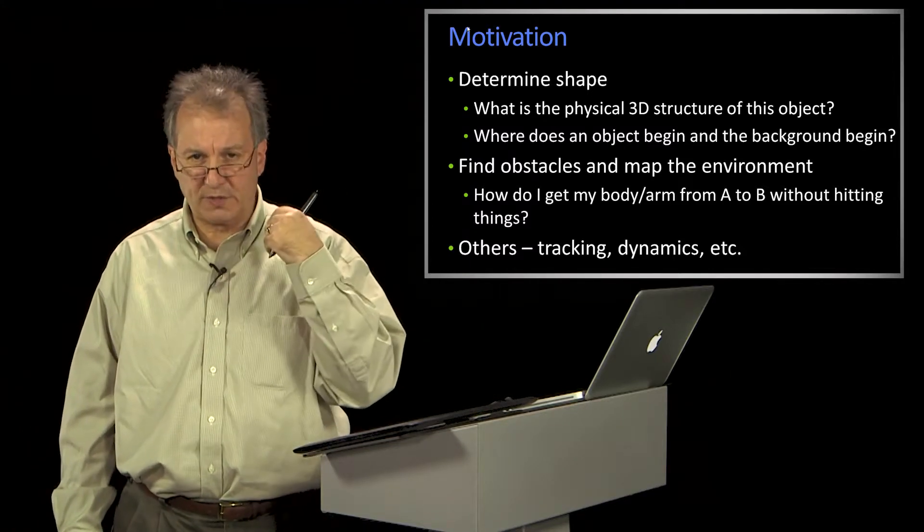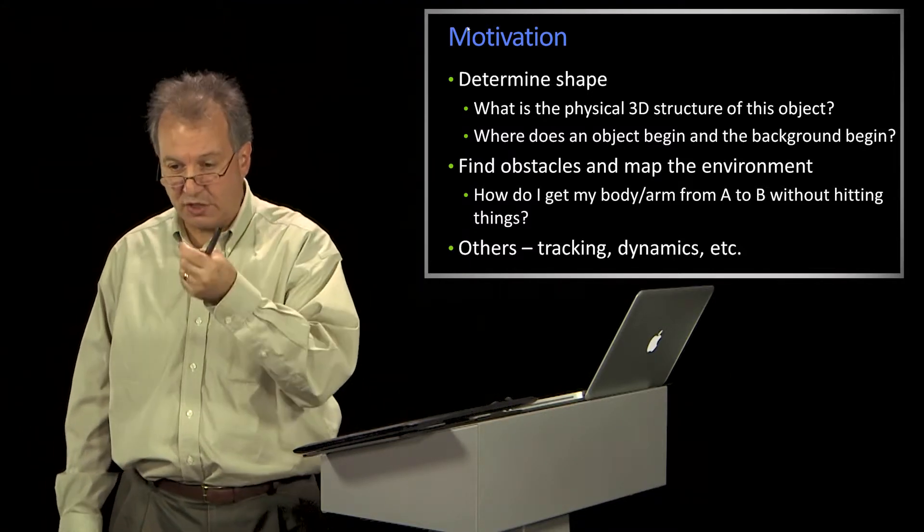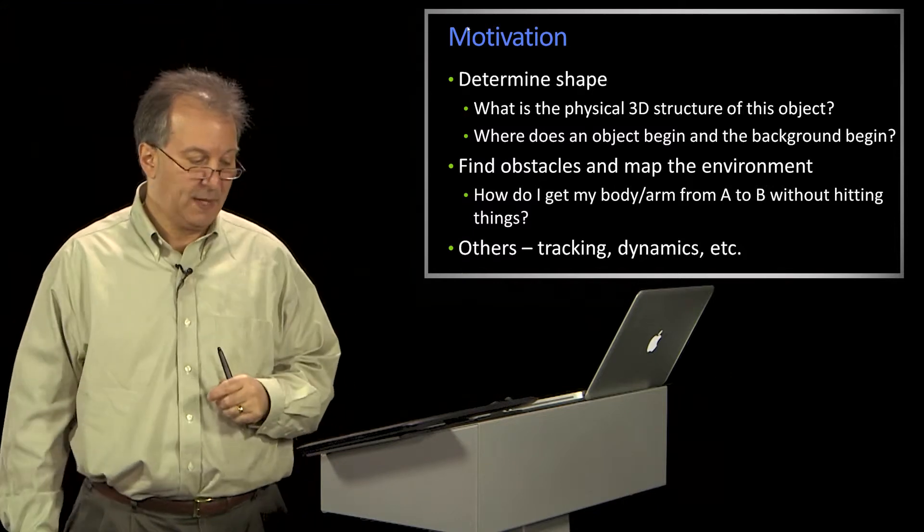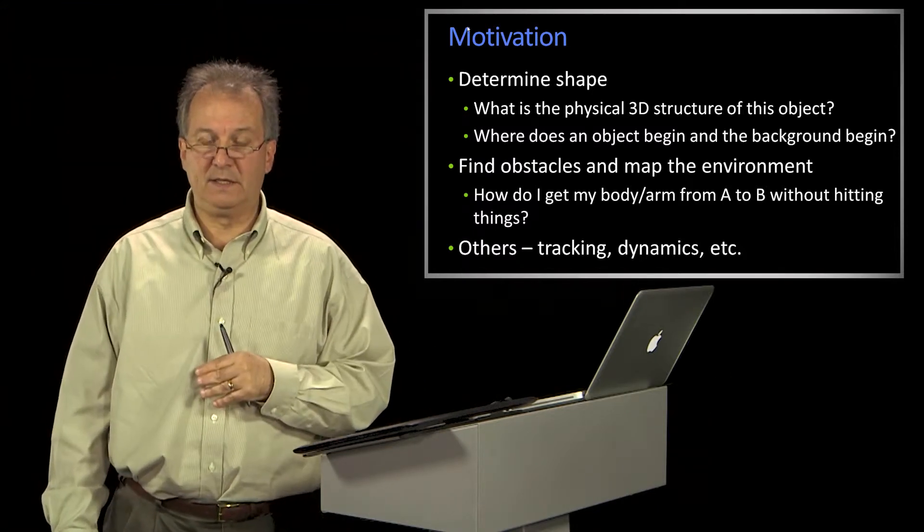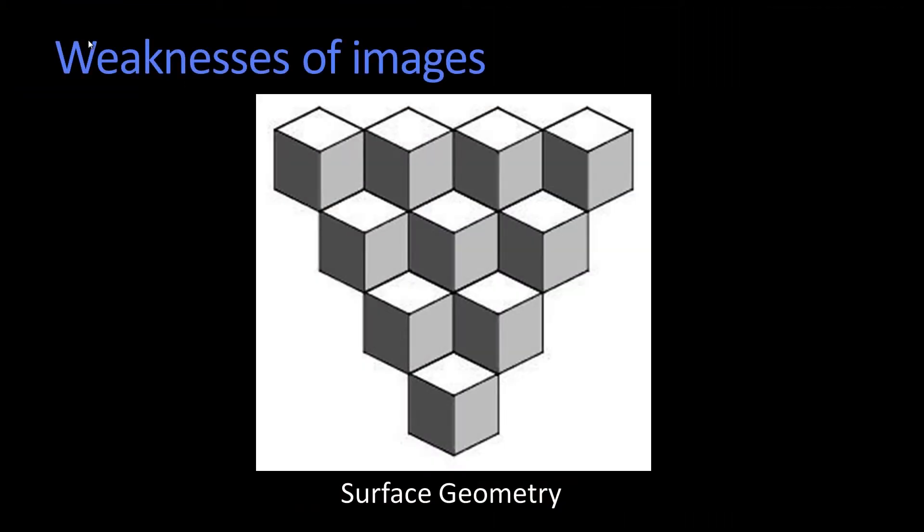That's given a resurgence to the interest in recovering geometry that's out there. And of course, recovering geometry is a fundamentally difficult problem in computer vision. Here's a picture. You look at this monocularly and you see a surface with some geometry on there. There's a certain ambiguity, perhaps, as to what's in front and what's behind.